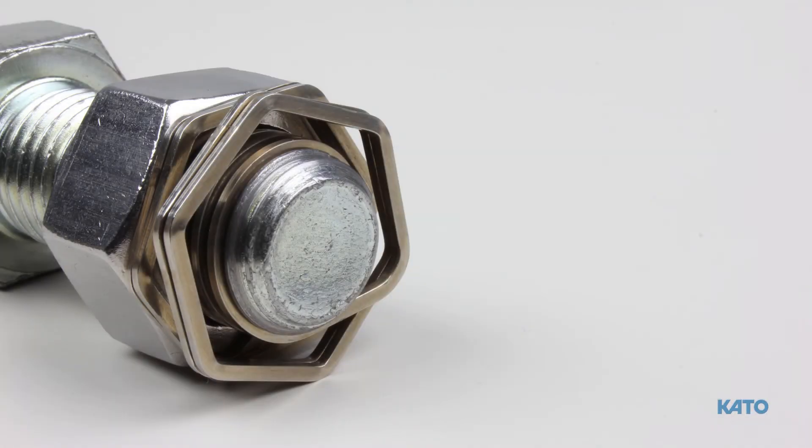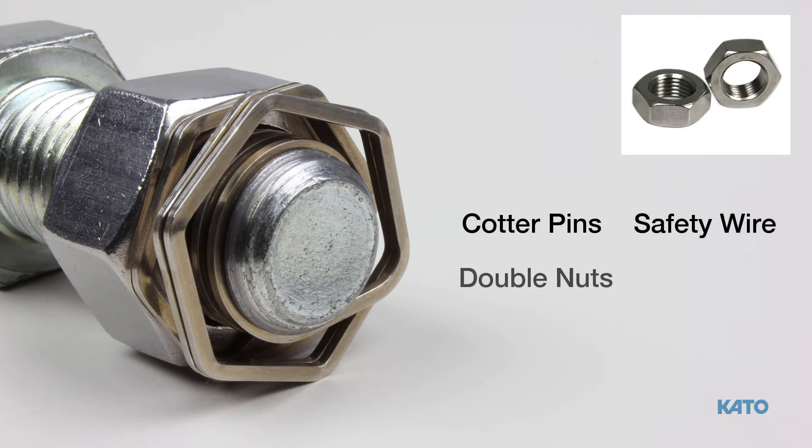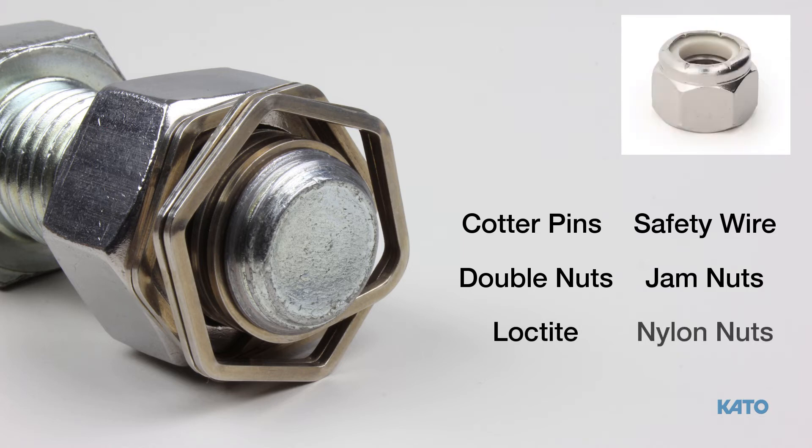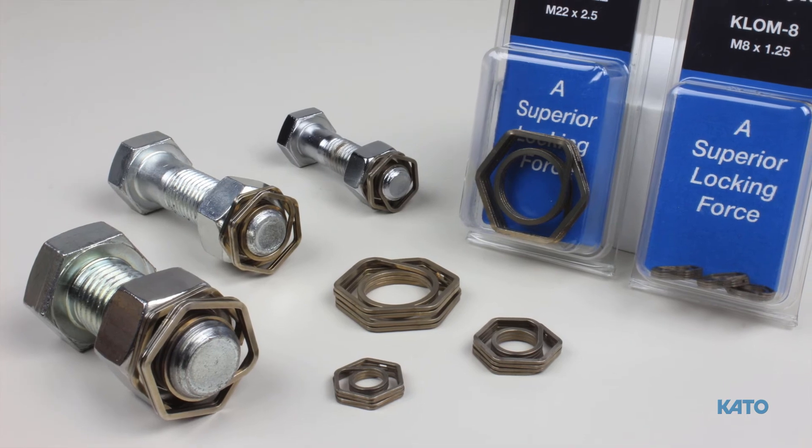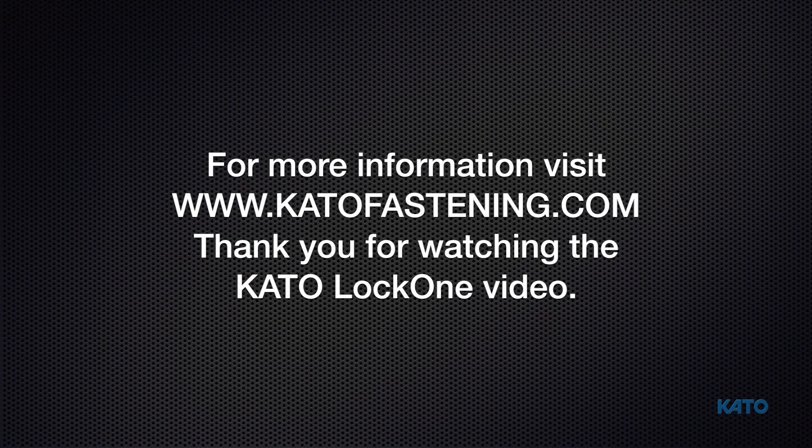As you can see, Lock One is very simple to use. Lock One replaces cotter pins, safety wire, double nuts, jam nuts, Loctite and more costly nylon nuts. For more information or to request samples, contact the Kato sales team. Thank you for watching the Kato Lock One video.